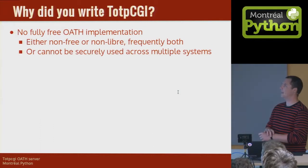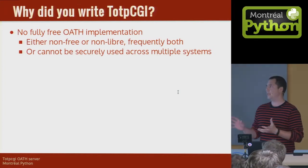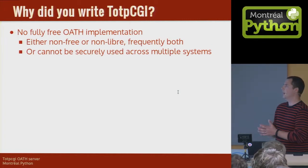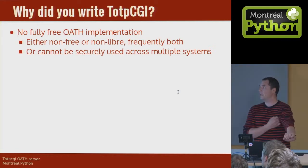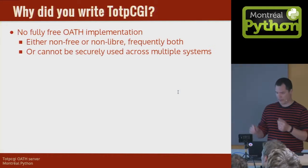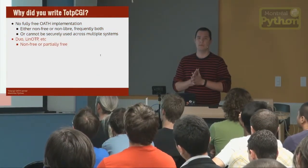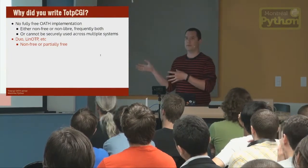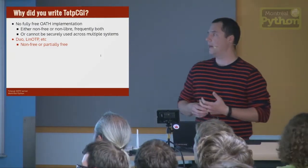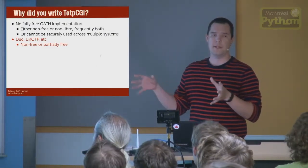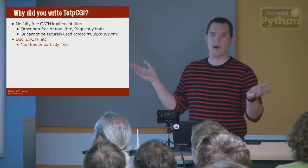TOTP-CGI goes back to a couple of years ago when we wrote it — there was no fully free OATH implementation, and there actually still isn't really. It's either non-free or non-libre, or frequently both. It cannot be securely used across multiple systems. There is Duo Security, which many people have actually used. It's cloud-based — you put all your eggs in the cloud basket. It's non-free; there are 10 users that are free, then you start paying. It doesn't scale very much if you have over 100 users.